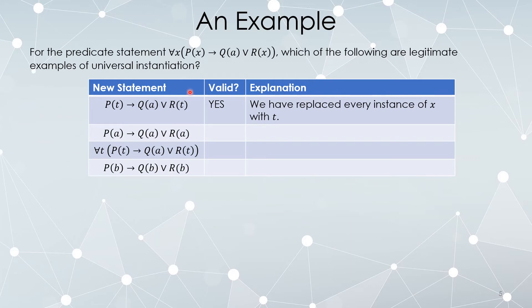Which of the following are legitimate examples of universal instantiation? Here's a list. Which of these statements can be achieved by universal instantiation? The first one is valid.